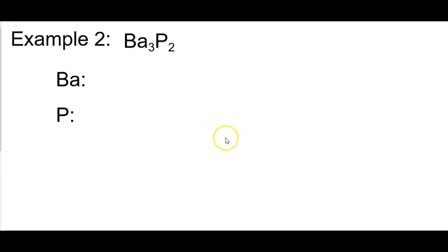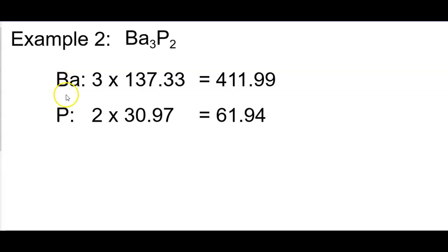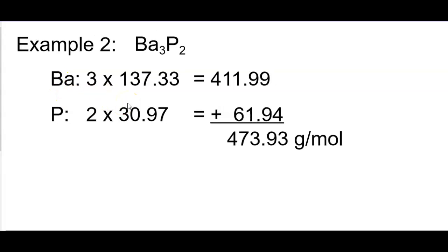Another example. Here we have barium phosphide. So we're going to list the atoms — barium and phosphorus. We're going to list how many we have of each: three bariums, two phosphorus. We're going to multiply each of them by their numbers off the periodic table, and then we're going to total those values.